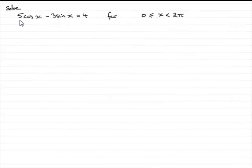In order to solve the equation 5 cos x minus 3 sine x equals 4, for x greater than or equal to 0 but less than 2 pi radians,